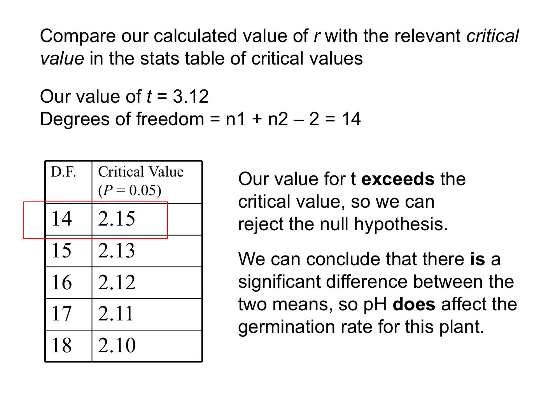In this case, our t-test value of 3.12 is much higher than the critical value of 2.15. Because our value is greater, the result is significant — we reject the null hypothesis and can say that pH does make a significant difference to the germination rate for this plant.